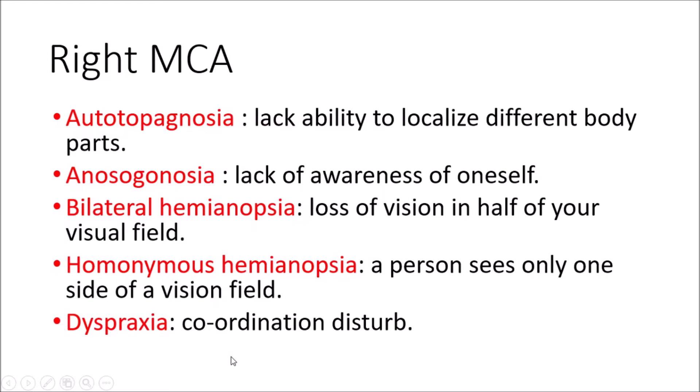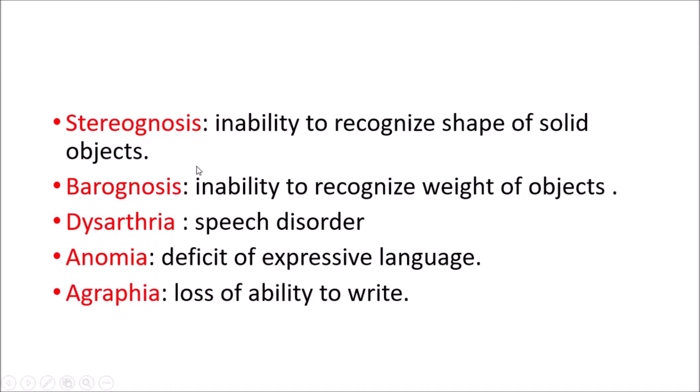Next is dyspraxia — a coordination disturbance in which motor planning is disturbed. This includes balance, movement, hand-eye coordination, and writing difficulties. Basically the motor planning and motor task component is disturbed. To perform anything you need coordination, and in dyspraxia this coordination is lost.